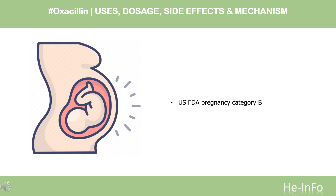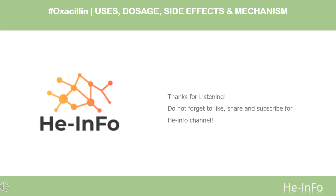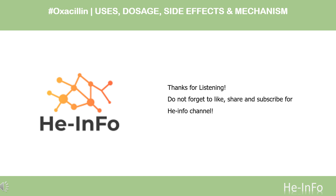Safety advice: Category B — No evidence of risk in humans, but studies are inadequate. That's all the information about oxacillin we collected. Thanks for listening. Don't forget to like, share, and subscribe to the heinfo channel if you liked this video, to get more health information updates.